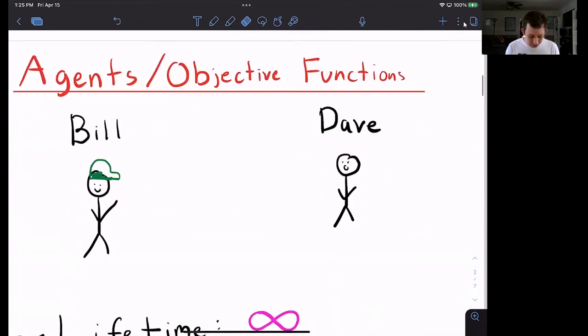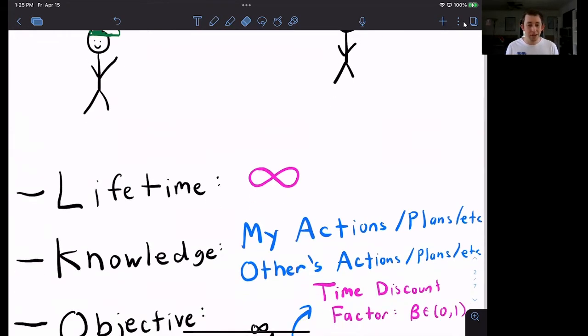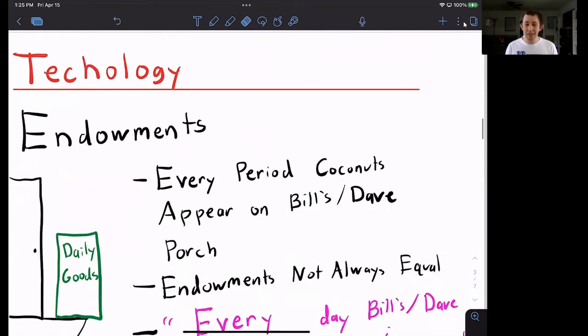So in this world, we still got two people, Bill and Dave. They both live forever. They both know everything about themselves and others. We still have this objective function. It's their utility function over their lifetime. And we've got this time discount factor beta technology.